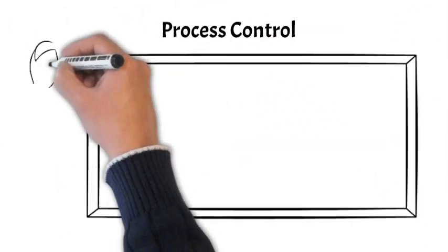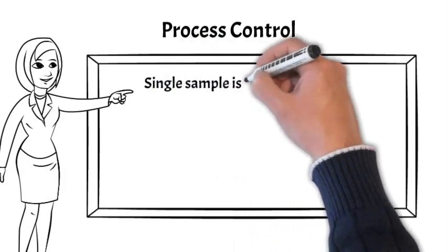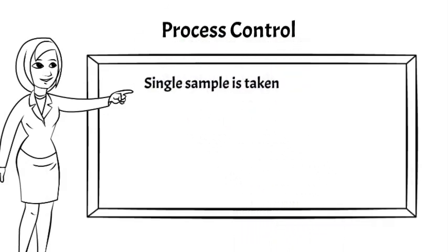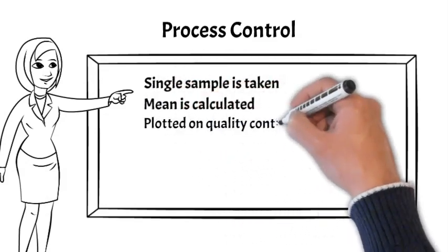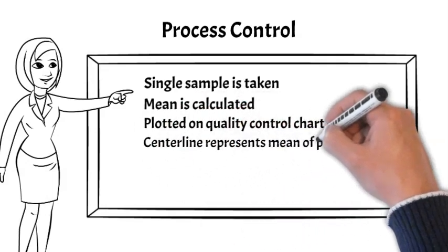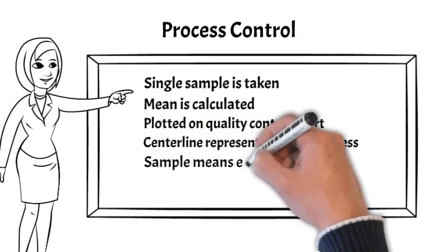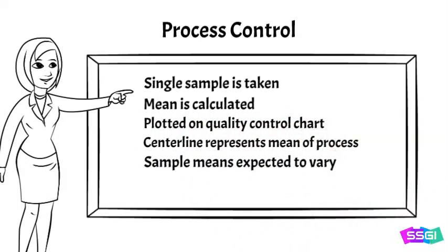When monitoring and controlling processes, a single sample is taken. The mean of that sample is calculated and plotted on a chart called a quality control chart. It includes a center line, which is called the target, and represents the expected average or mean result of the process. Sample means, however, are expected to vary from one sample to the next, even when the process is stable and in control.